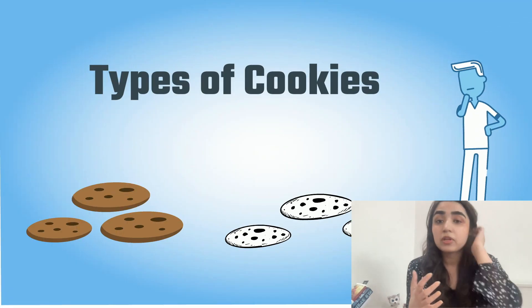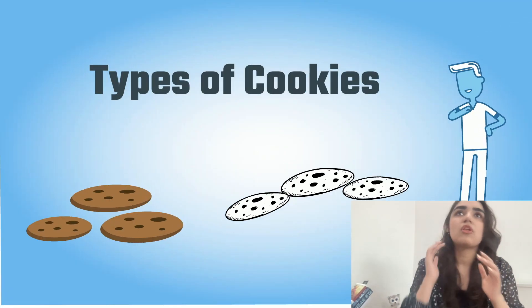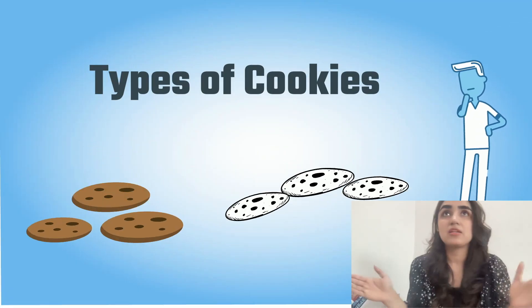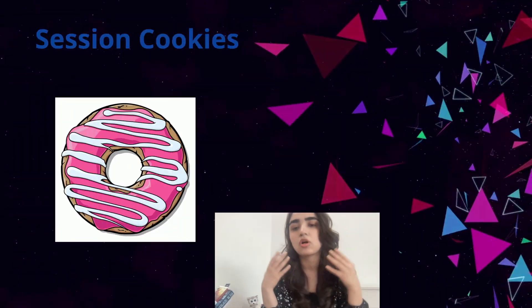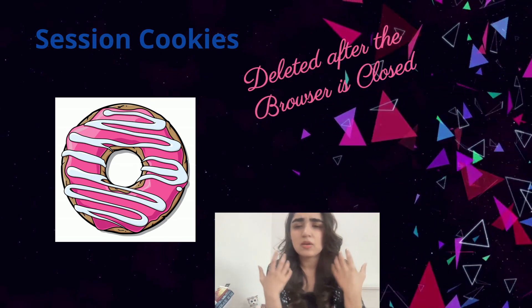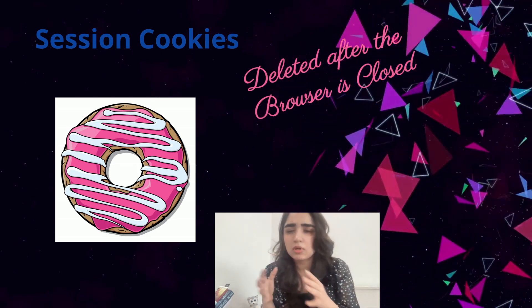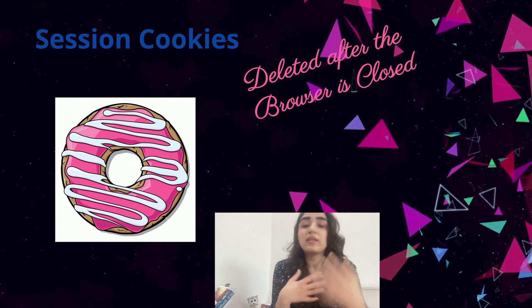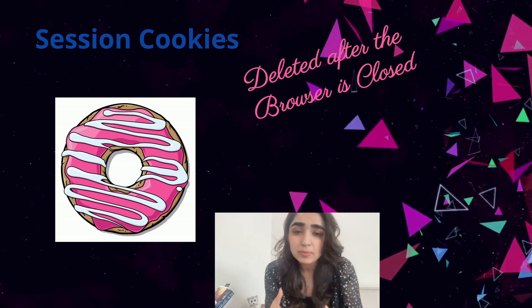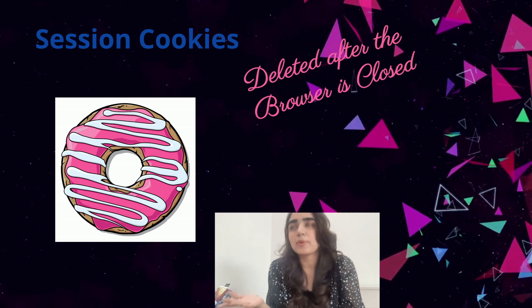So what are the various types of cookies? Although there are a lot of ways that cookies can be divided into various types, we're going to talk about two main types. One categorization is by the duration that they are held: session cookies and persistent cookies. Session cookies are temporary and they only last until you close your browser. They're used to store information that needs to be remembered while you are surfing a website, such as items in your shopping cart.